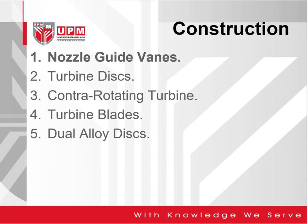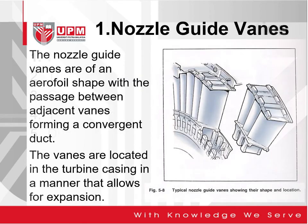We will now look at the first stage of turbine, which is the nozzle guide vanes. The nozzle guide vanes are of an airfoil shape as shown in figure 5.8, showing their shape as well as the location. It is an airfoil shape with the passage between adjacent vanes forming a convergent duct, because the gas will be accelerated.